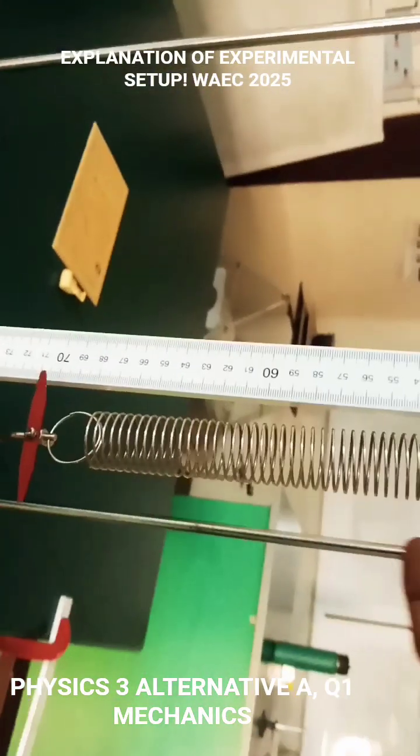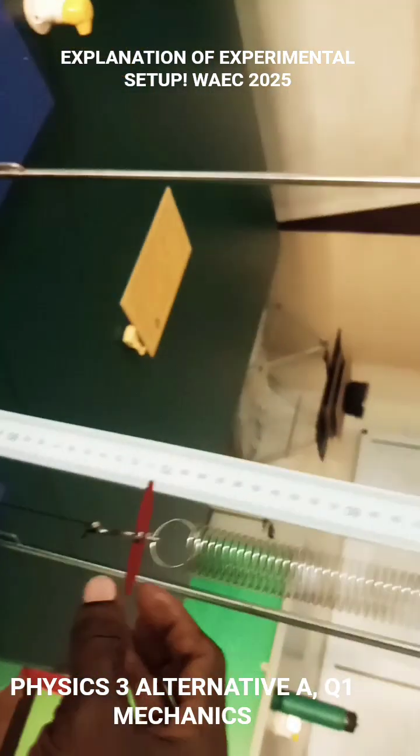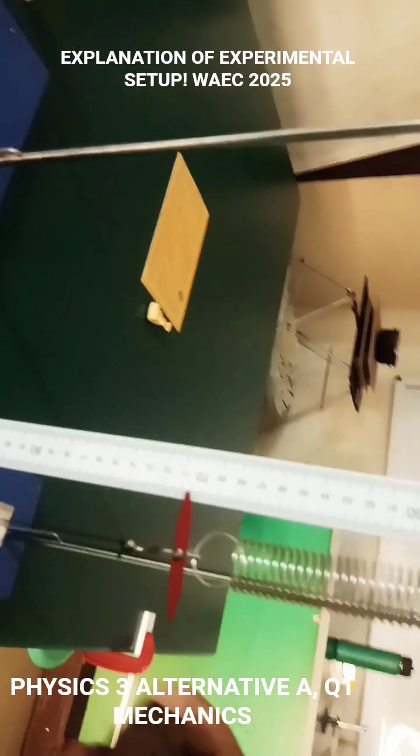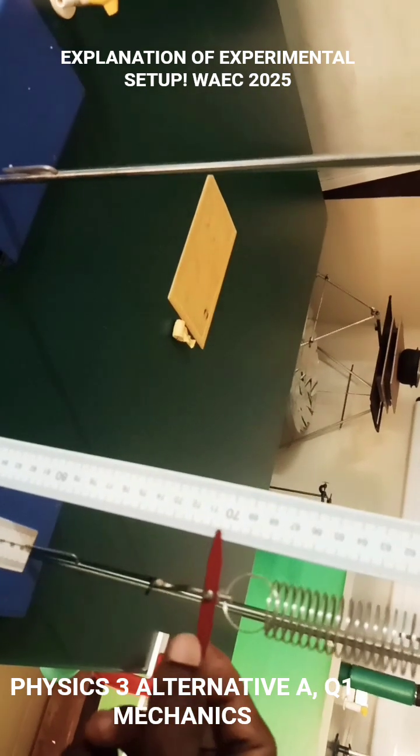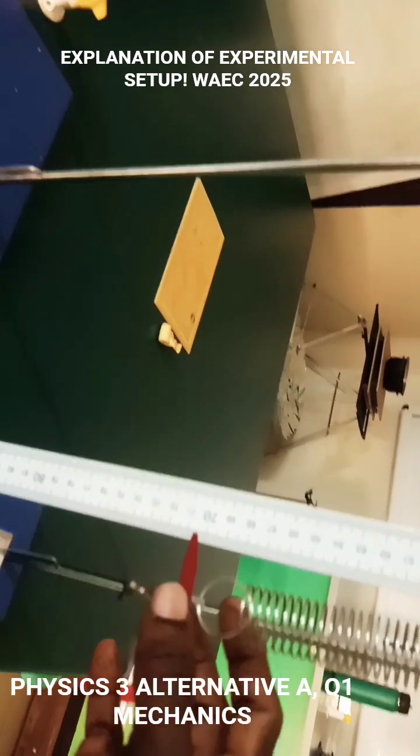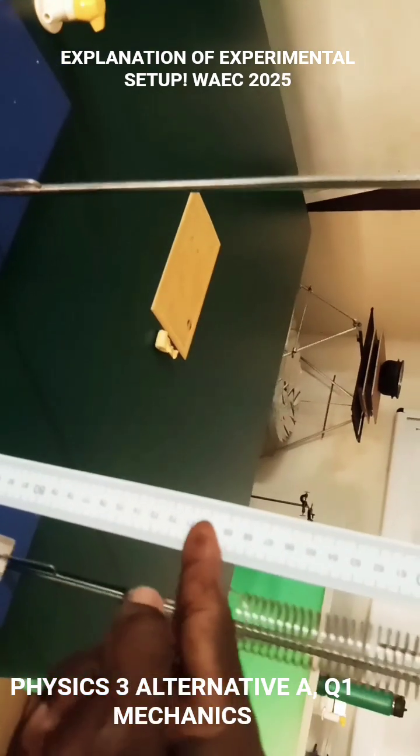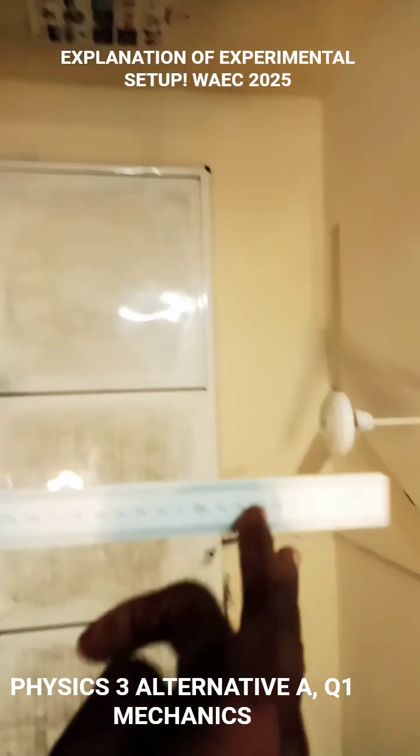With the spring, we already have a standard spiral spring here. If you have a spiral spring that does not have this pointer, you have to put a pointer here with a paper tip or gum to point in this direction.